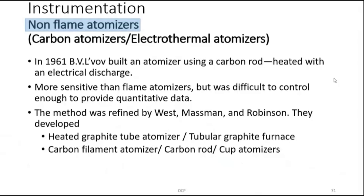Let's start with the first set of non-flame atomizers. They are called carbon atomizers because carbon is used in their construction. They are also called electrothermal atomizers — that carbon assembly is heated (hence 'thermal') and the heating is brought about by electricity (hence 'electro-thermal').